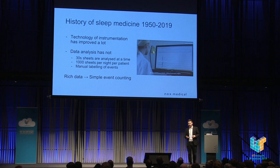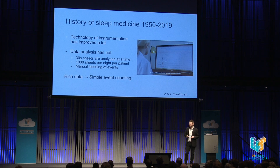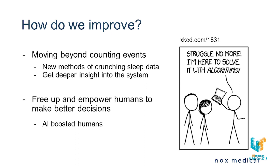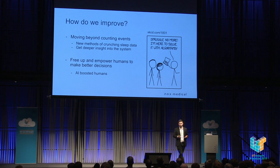This incredibly rich data — about one gigabyte per patient per night — is reduced to simple events. This is like incredible compression: you go from one gigabyte into single bytes. There's a lot to be harvested from this data. We want to move beyond counting events, and we need new methods of crunching the sleep data to get a deeper insight into the body as a system and how sleep disorders are affecting it. Furthermore, we want to automate and free up humans to do more creative and productive things.